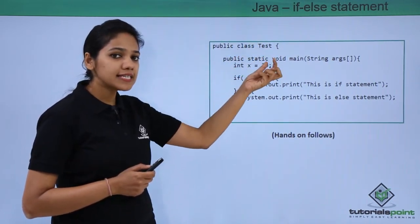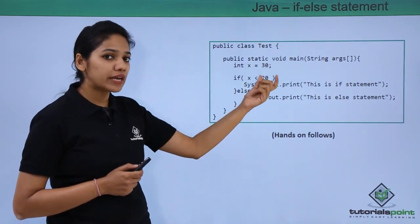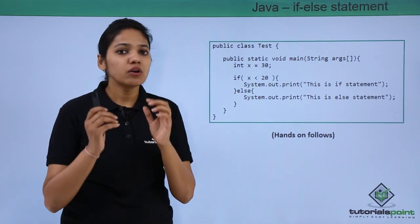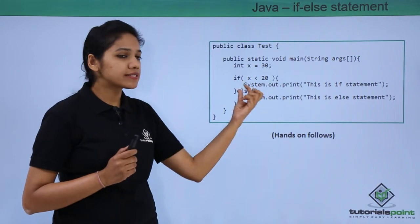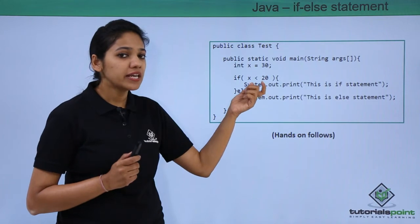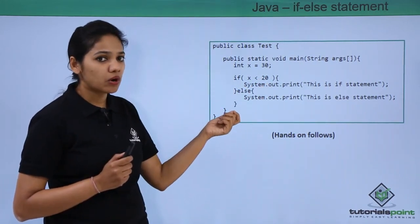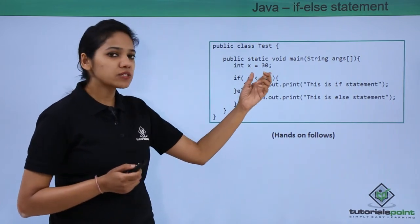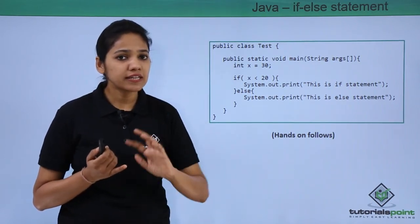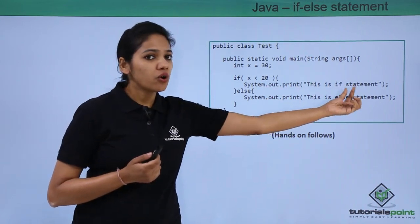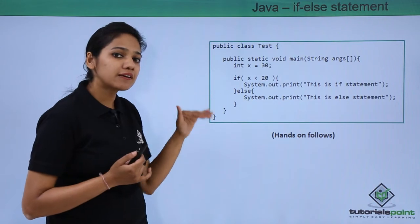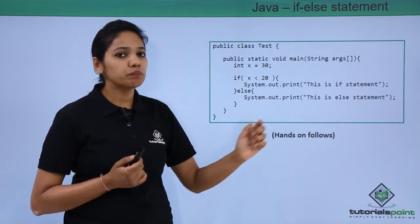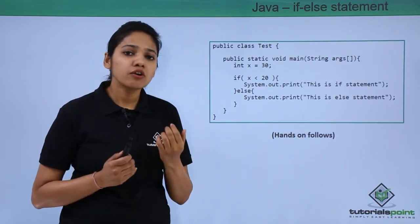We have created an example with a class called Test. Under the main method we have created a variable of integer type where the value is 30. Under the if keyword, inside the brackets, we provide a boolean expression. If this expression is true it will execute the block of statements inside the if. If not, we write an else keyword outside that block and then provide a block of statements to be executed. In this case, x is 30 — it checks if 30 is less than 20. Since 30 is not less than 20, the else statement is executed and it will print 'this is an else statement'.